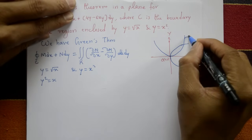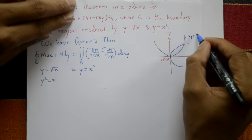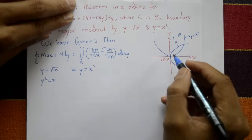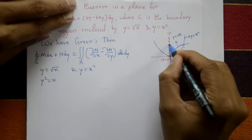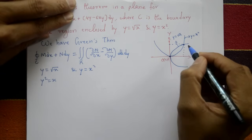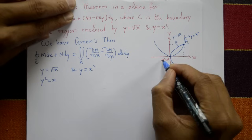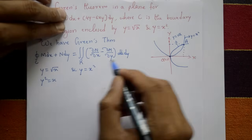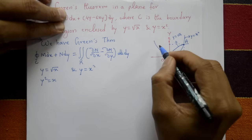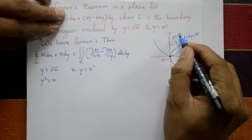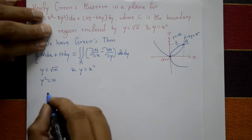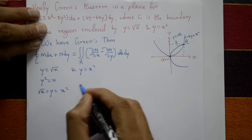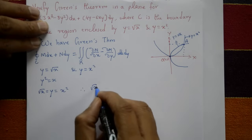The curve y = x² and the curve y = √x are plotted. Finding the point of intersection: set y = √x equal to y = x², so √x = x². The intersection points are labeled O (origin) and A.